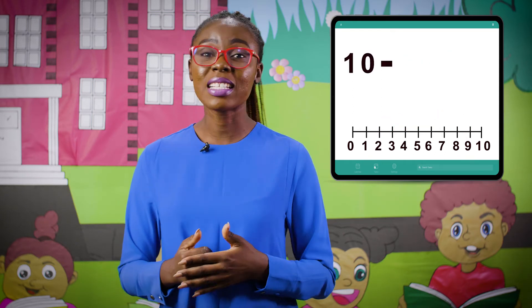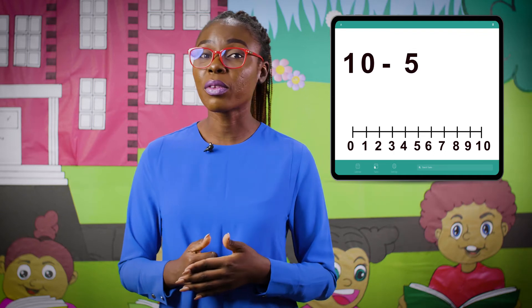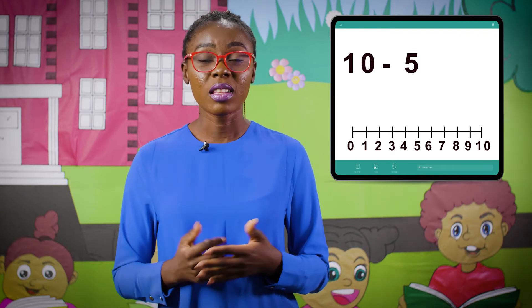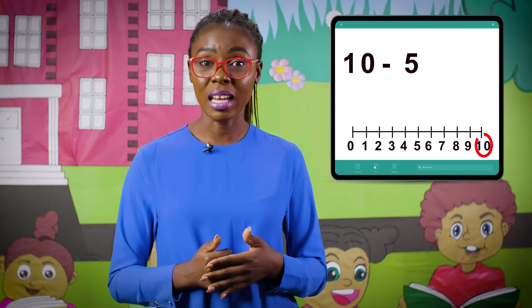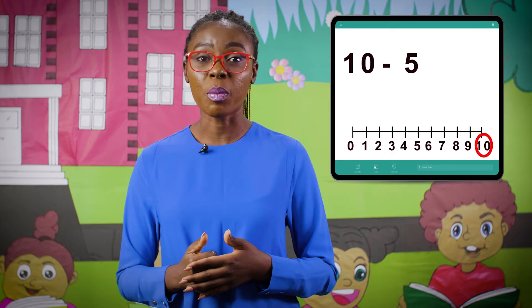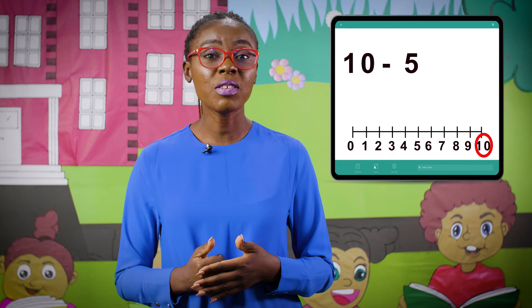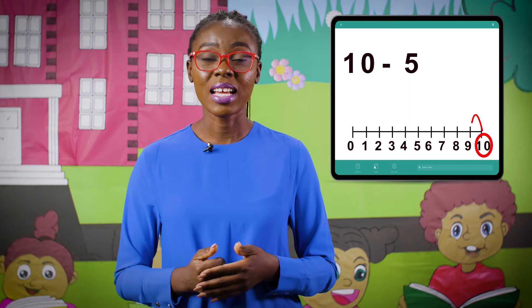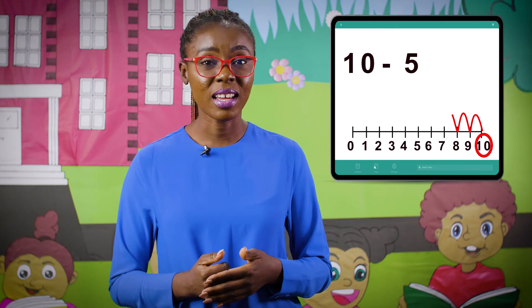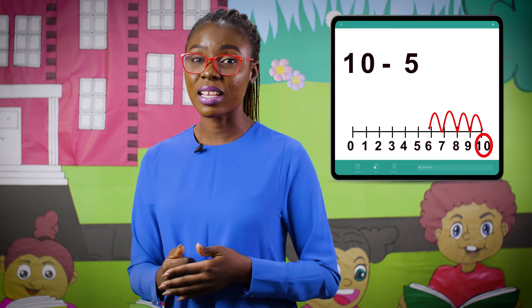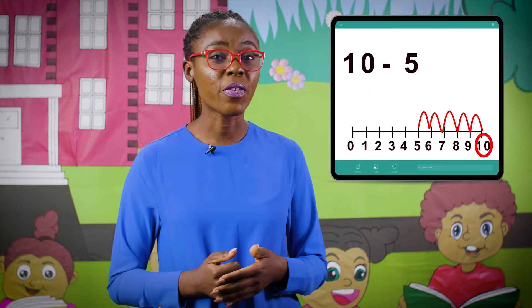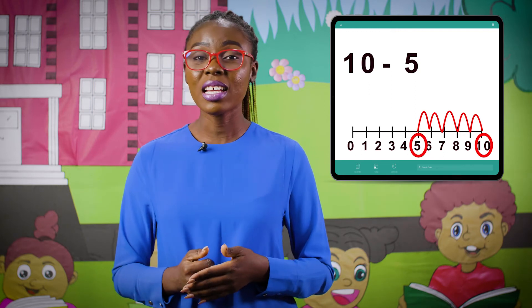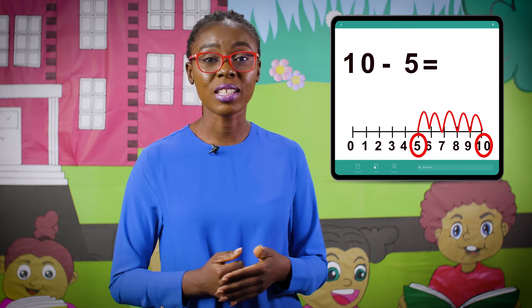Let's try one more. How about ten take away five? Remember, start from the bigger number. The bigger number in this question is ten, so that's where we are starting from — ten. And then we are counting back five steps. Let's count together: ten, nine, eight, seven, six, five. So ten take away five will give us five.